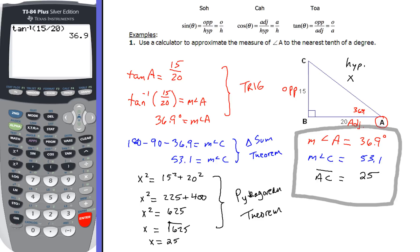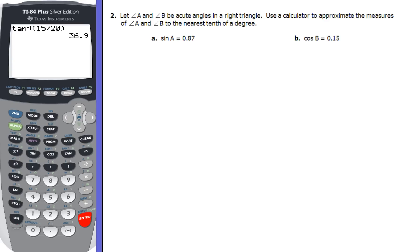Now next, we're going to take a look at another example. But this time, we're going to have A and B being acute angles in a right triangle. Use calculator to approximate the measures of A and B, to the nearest tenth of a degree. So this is just going to be button pushing here in the calculator. And with this, here's what I want you to do first so you understand how to push the buttons in there.